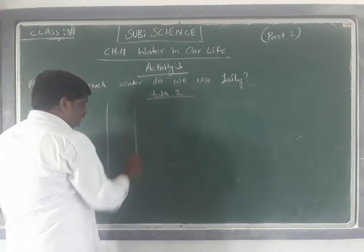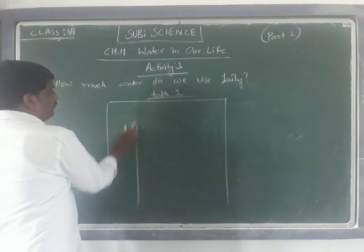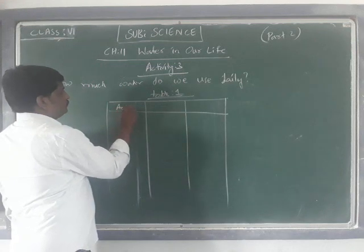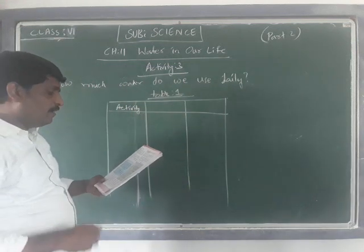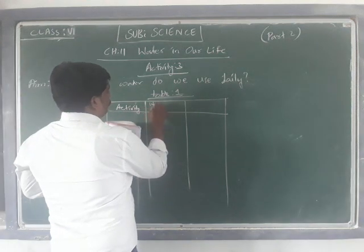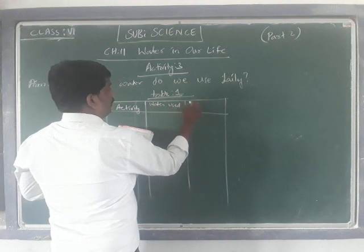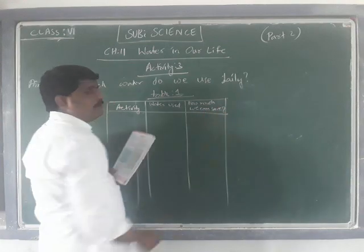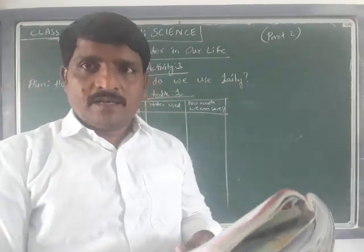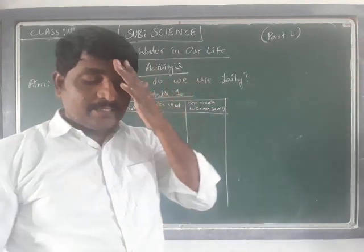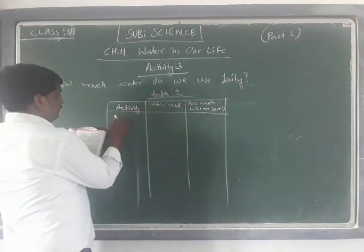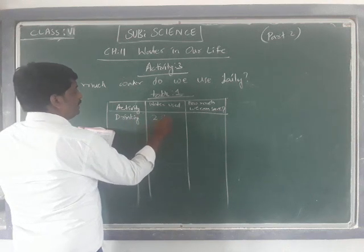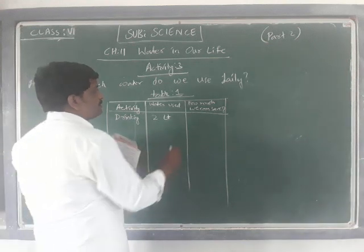Table 1 gives information about different activities we perform, how much water we use, and how much we can save - these are the three columns in the table. The first activity is drinking. For drinking, we use 2 liters of water. How much can we save? We cannot save anything - no saving for drinking water.